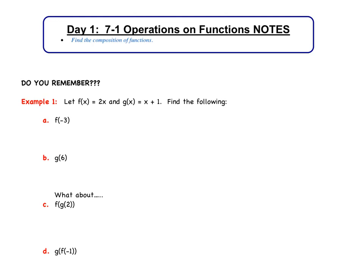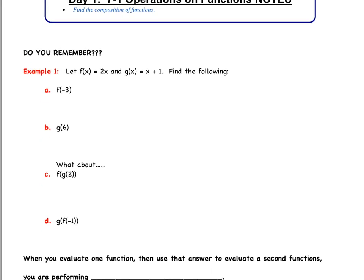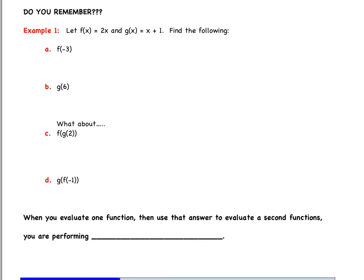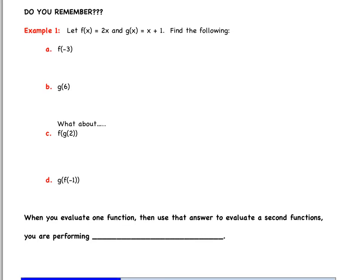The first one, f(-3). Do you remember what we have to do? Hopefully you do, and you say all we're going to do is substitute -3 into function f, which is exactly right. So f(-3) is going to be equal to 2 times -3. So we substitute in and we evaluate, and we get -6. Pretty easy.